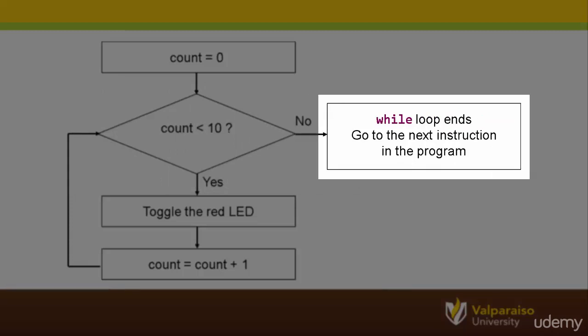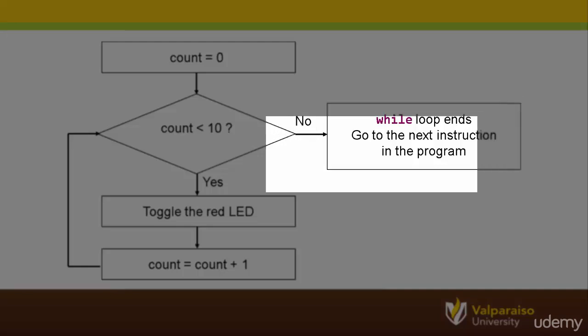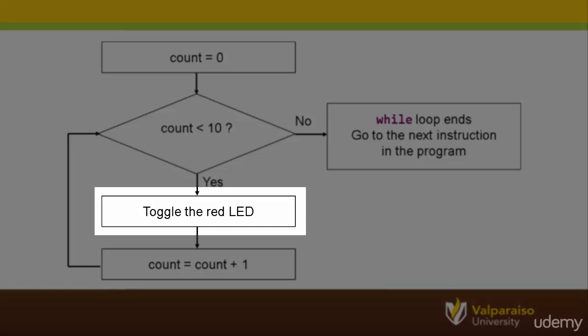In this example, however, we just initialized COUNT to be equal to zero. Therefore, COUNT will be less than 10. The while loop then allows the microcontroller to continue on to do something inside of the while loop. For example, toggle the red LED light.